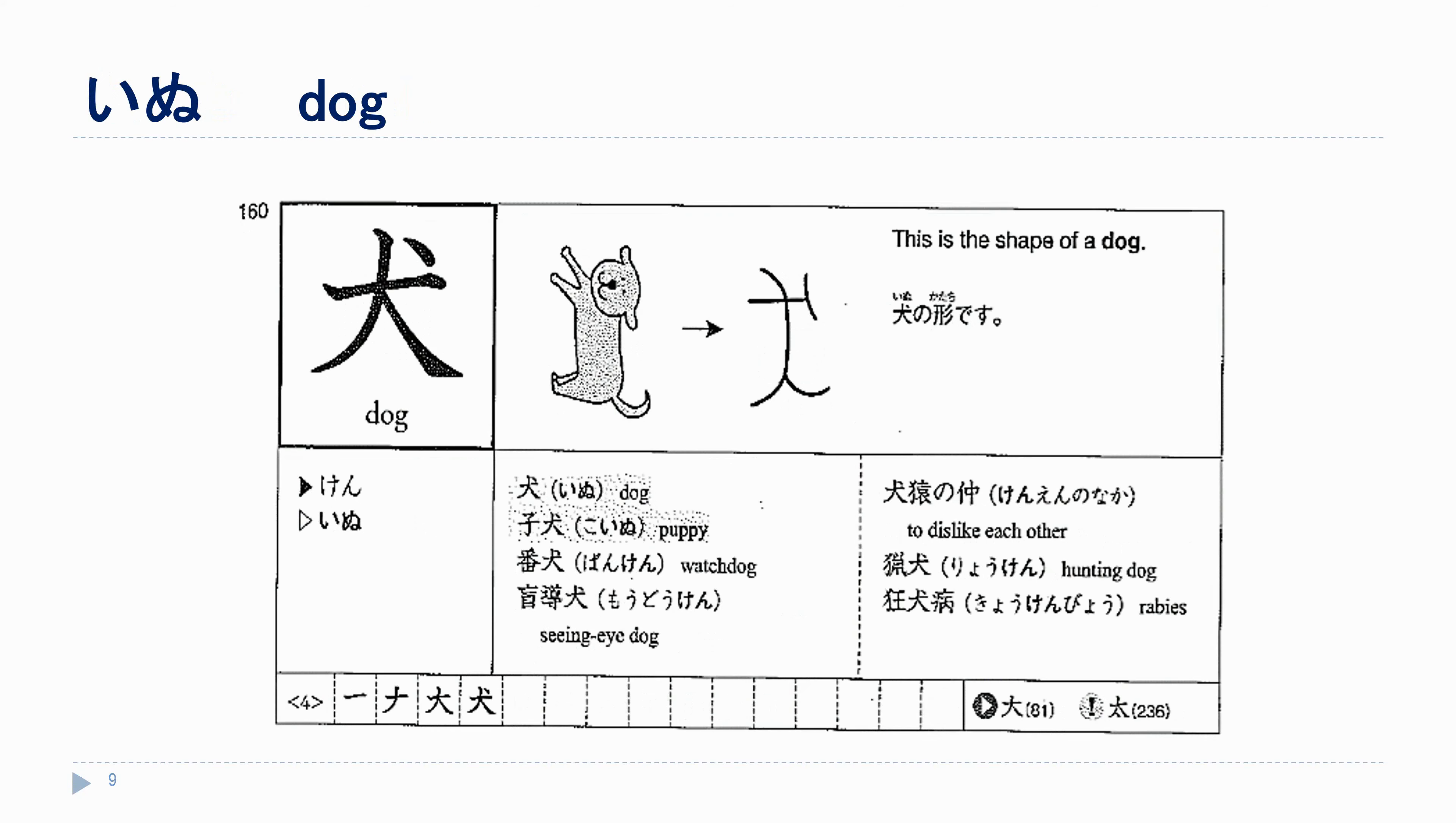Good news. Our last chapter, our last kanji for chapter 13 is really easy. This is いぬ. We start with ookii no o, いちにさんよん. Then we just add the last stroke, this little dot in the corner.